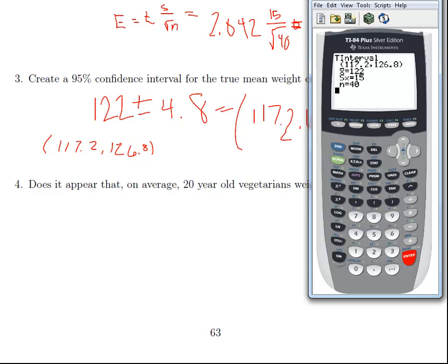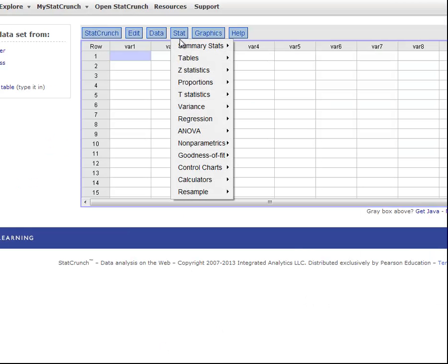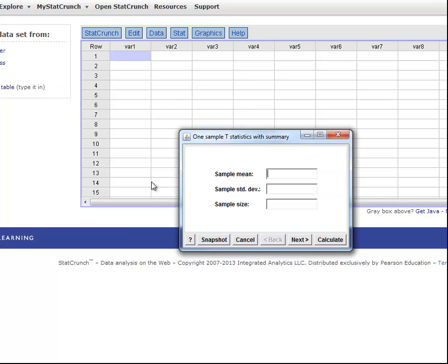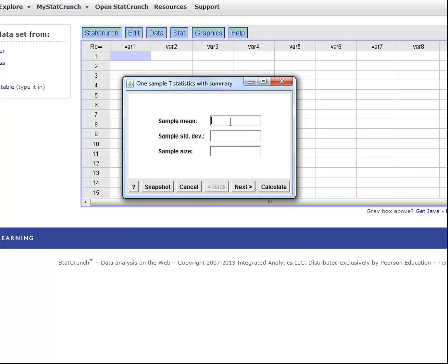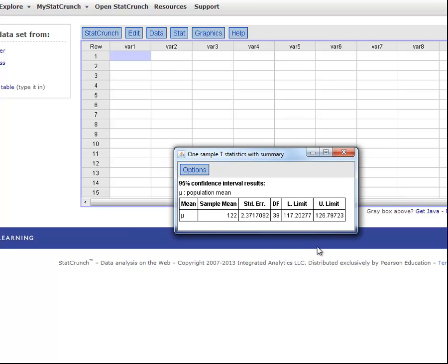For the StatCrunch folks, I go to stat, t statistics, one sample with summary, and then I put in the same information: 122 for the sample mean, 15 for the standard deviation, and 40 for a sample size. I hit next, I hit confidence interval, and then I hit calculate. I get the same confidence interval as I do there.